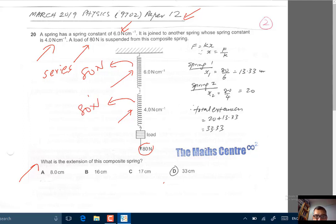Again, when you exert a force of 80 Newton in a system connected in series, both springs will experience 80 Newton. Now, we want to work out the extension of this composite spring.